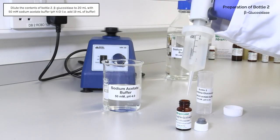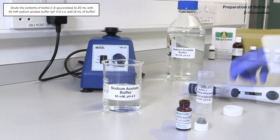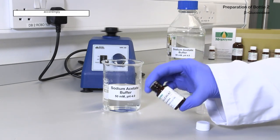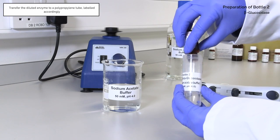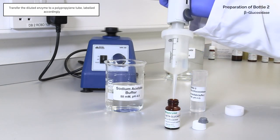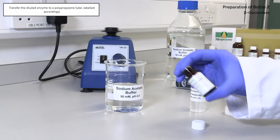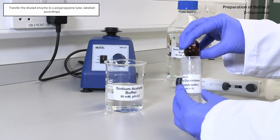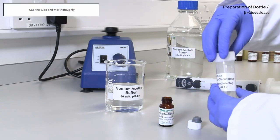The contents of bottle 2, beta-glucosidase, are diluted to 20 milliliters with 50 millimolar sodium acetate buffer pH 4. The diluted enzyme is transferred to a polypropylene tube, labeled accordingly. Cap the tube and mix thoroughly.